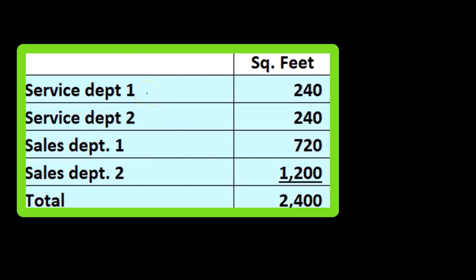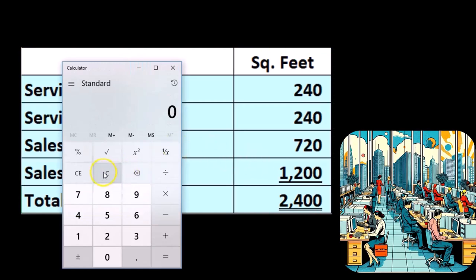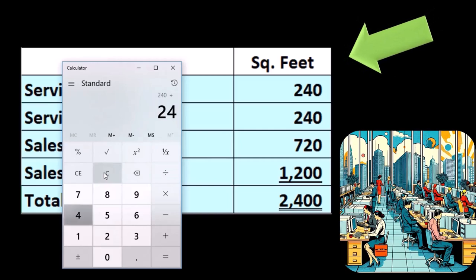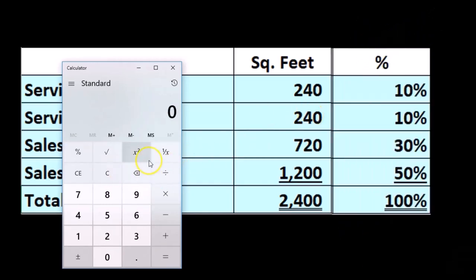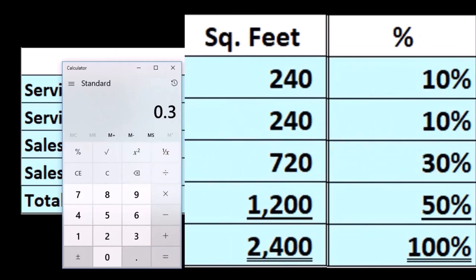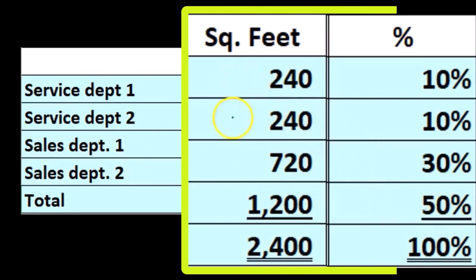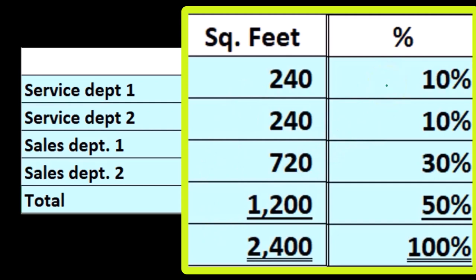To do that, we need the floor space for each department. Department one is 240, department three is 720, sales department one is 720, and sales department two is 1,200. We then look at the percentages: 240 divided by the total gives us 10%, and 720 divided by the total gives us 30%, and so on. All percentages must add up to 100%, because all we're doing is expressing each department's square footage as a share of the total 2,400 square feet. We take the square footage of one department in relation to the total, and if we do that for all departments, we get percentages which must add up to 100%.